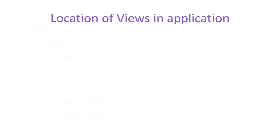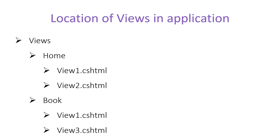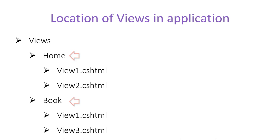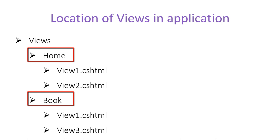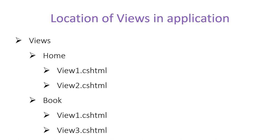Let's understand the location of views in the application. At the root level we have one folder called Views. Inside this Views folder we have subfolders whose names equal the names of the controllers. Suppose we have two controllers — HomeController and BookController. We create two folders: Home and Book. All views related to HomeController go inside the Home folder, and all views related to BookController go inside the Book folder.